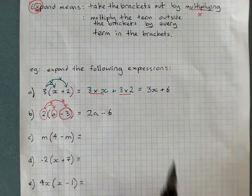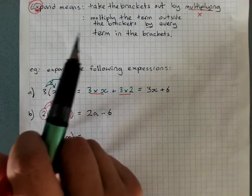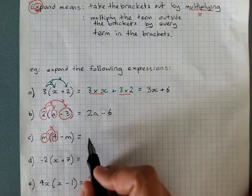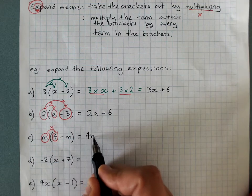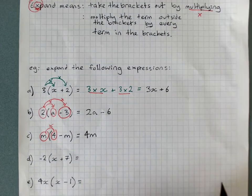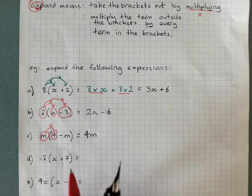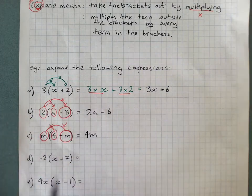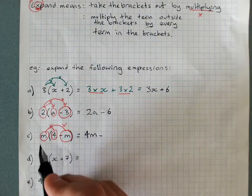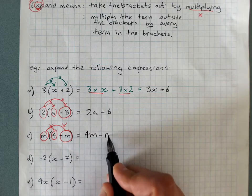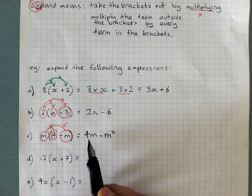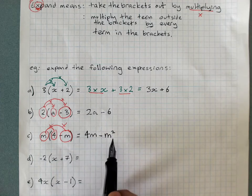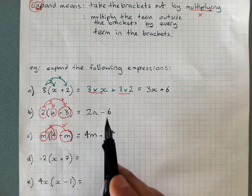Term outside the brackets times the first term: m times 4 is 4m. Be careful — remember the letter comes after the number it's multiplied by. Then m times negative m: positive times a negative is negative, and m times m is m squared. We can't subtract these because they're not like terms — m squared is not the same as m. That's as far as it goes. That's your answer, you've expanded.